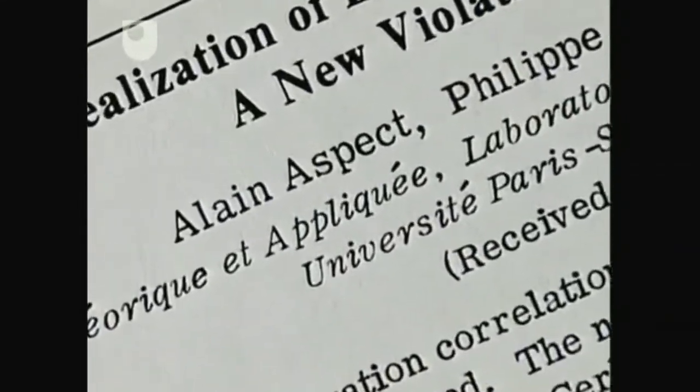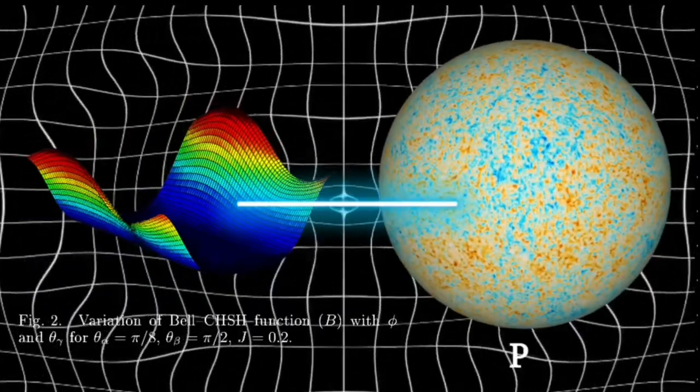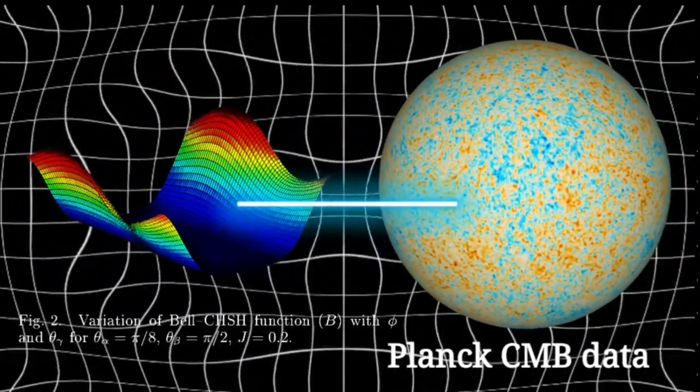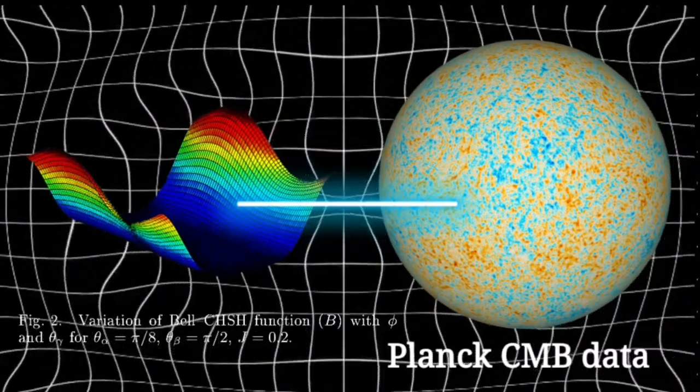In theoretical physics, a preferred frame is usually a special hypothetical frame of reference in which the laws of physics might appear to be identifiably different from those in other frames.